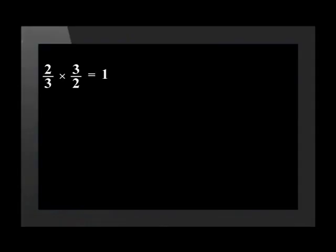Another important thing to remember about reciprocals is that one value is equal to one over the other value. Let's look at this together. We already know that two over three and three over two are reciprocal values of each other. If one reciprocal is equal to one divided by the other reciprocal, this means that two over three should be equal to one divided by three over two. When we divide fractions, we can change the divide sign to a multiply and invert the fraction, meaning that this is equal to one times two over three, which of course equals two over three.